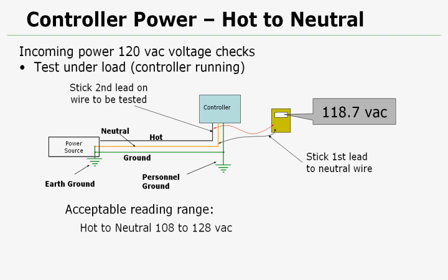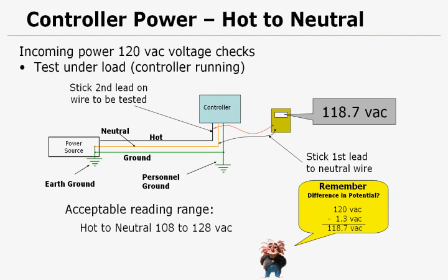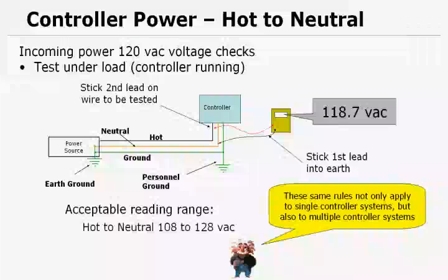Now using the examples we've got so far, notice that we had 120 volts, then from neutral to ground had 1.3 volts. The difference in potential is 118.7, so it all makes sense. We did three readings. You can see the three readings and how they all intertwine. Remember, these same rules not only apply to single control systems, but they also apply to multiple controller systems.